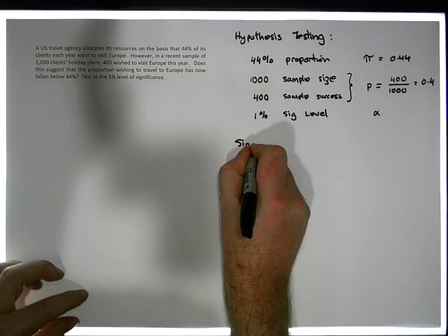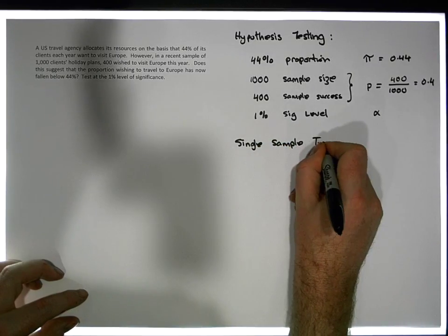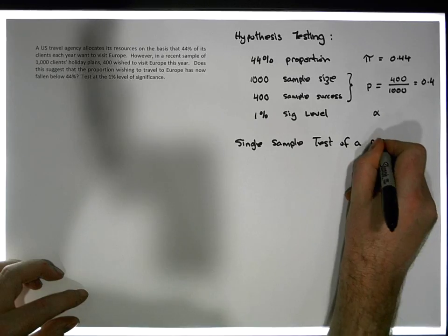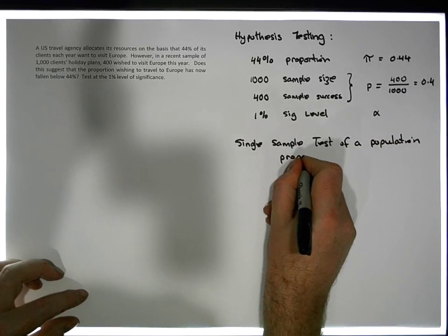So this particular test that we're undertaking here is what's known as a single sample test of a population proportion.